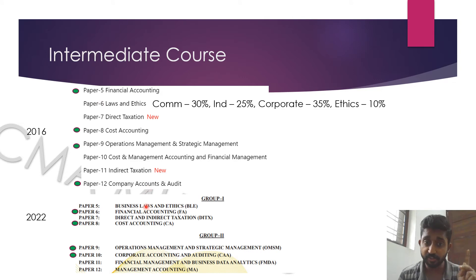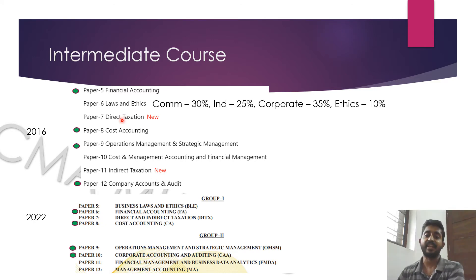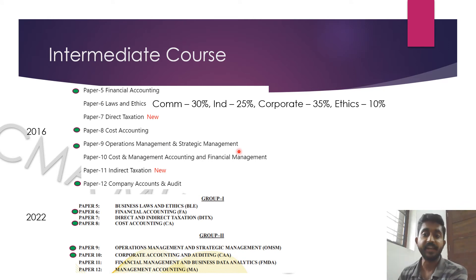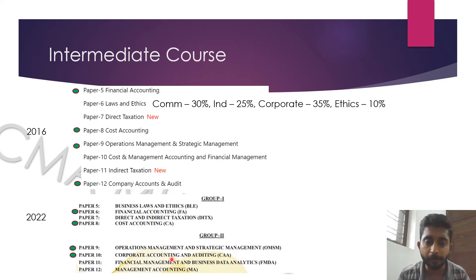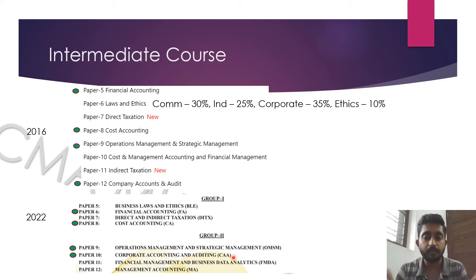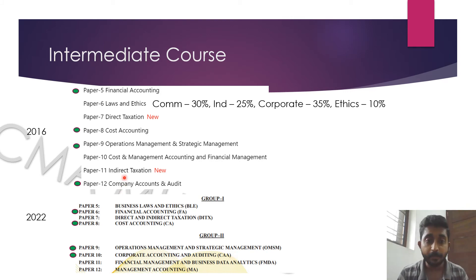Paper 6 (Law and Ethics) has been renumbered to Paper 5, and Paper 7 (Direct Taxation) is changed to Direct plus Indirect Tax in Group 1 itself. Moving to Group 2 — Operation Management and Strategic Management has not changed at all; you can follow the same videos on our channel. Paper 10 (currently Paper 12), Company Accounts and Audit, is changed to Corporate Accounting and Auditing — a name change where 'company' is replaced by 'corporate,' reflecting more professional and business-oriented terminology.